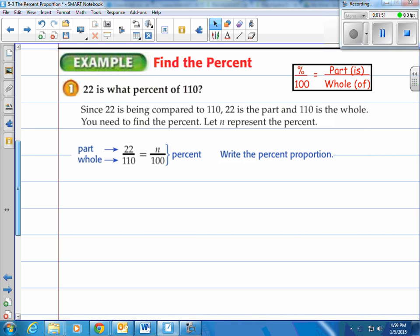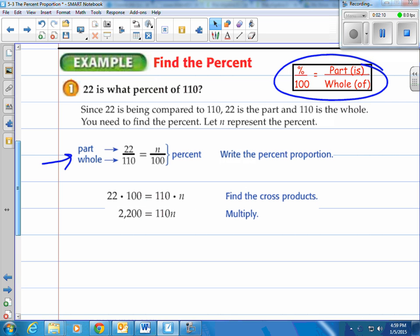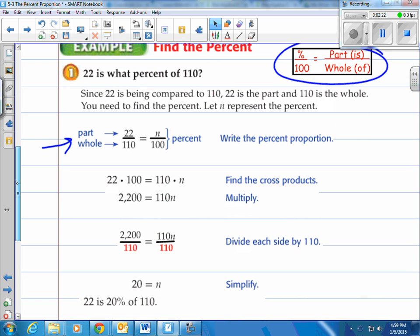It says let n represent the percent. You can see how they put 22 as the part, 110 is the whole right here. And then they have n as the percent, which is of course out of 100. Next thing you do, cross multiply to solve for n. We've done this in our previous lessons. In the end we divide by 110, and we have 20.